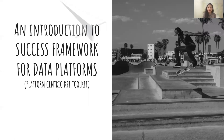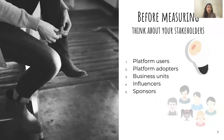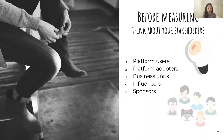Before we start thinking about measures, there is one more important step: thinking about our stakeholders — the people who matter to your platform and whose needs influence your measures. Platform users, adopters, and business units are great examples. But also influencers — people who influence your platform to grow or change, like enterprise architects and people responsible for organization-wide decisions. Sponsors are people who are directly or indirectly involved in funding the growth of your platform.